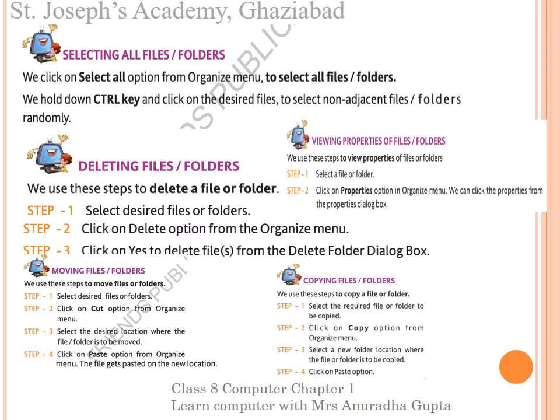Next, how to view properties of a file or folder. These are the steps. Step 1: select a file or folder. Step 2: click on Properties option in Organize menu.